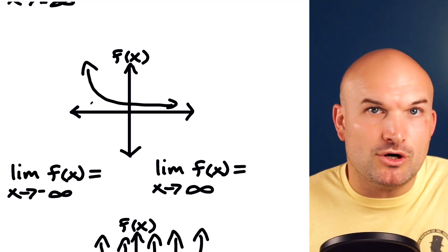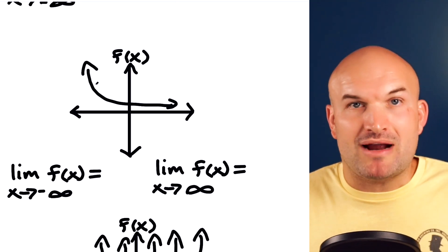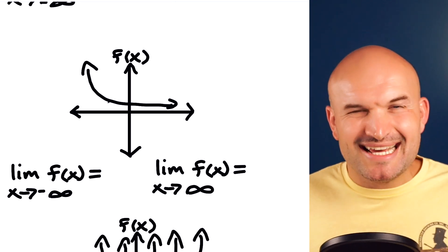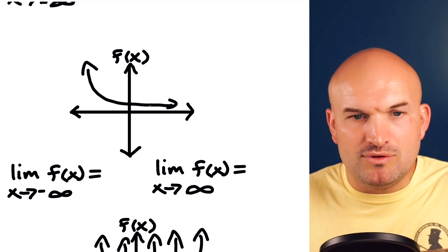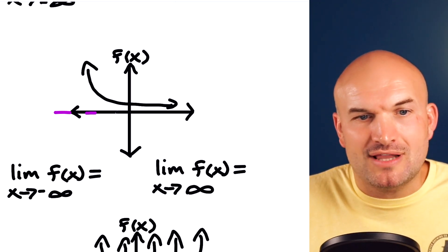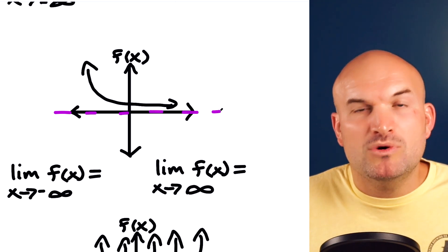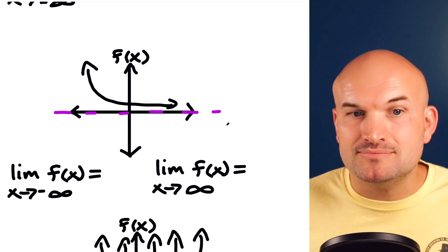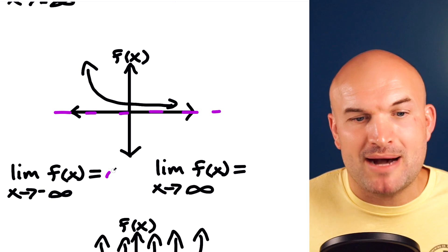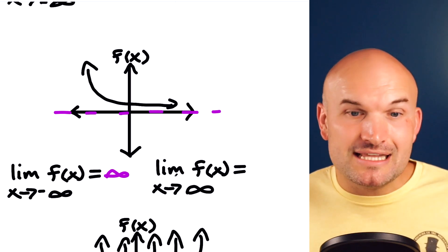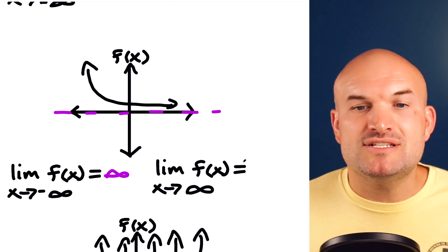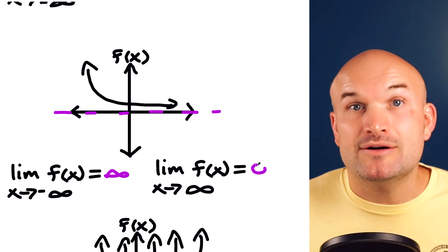In the next example, as we're going to the left the graph goes up and up. As we're moving to the right, it looks like it's slowly approaching a horizontal asymptote at zero. So the limit as x approaches negative infinity equals positive infinity, and the limit as x approaches infinity equals zero.